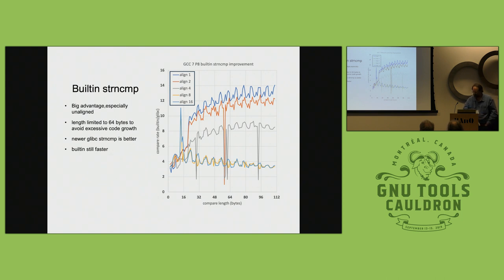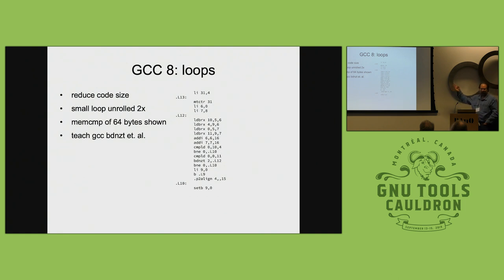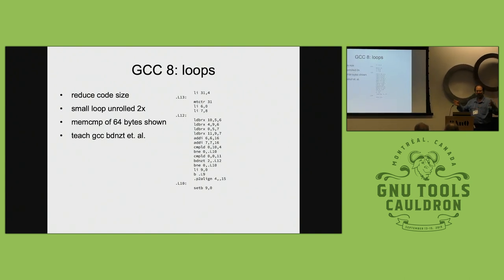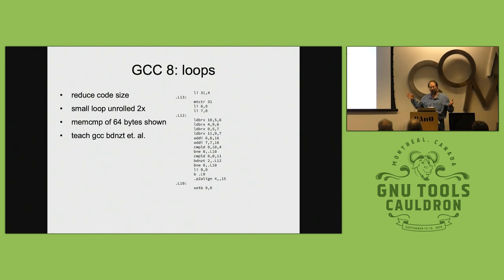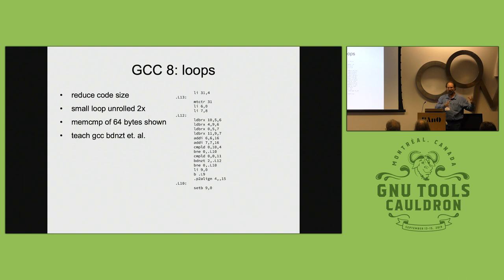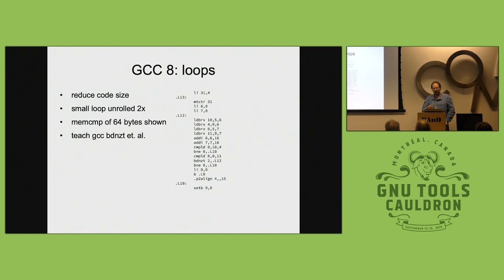On GCC 8, I said we have to start generating loop code. From that last graph it would make sense to handle longer strings, because even the ones that converge — you want to get out to 128 bytes or more to cover the performance gap between inline expansion and a library call. The library call can be specialized in many ways, but that call overhead is a big hump to get over — that's what motivated me to generate loops.